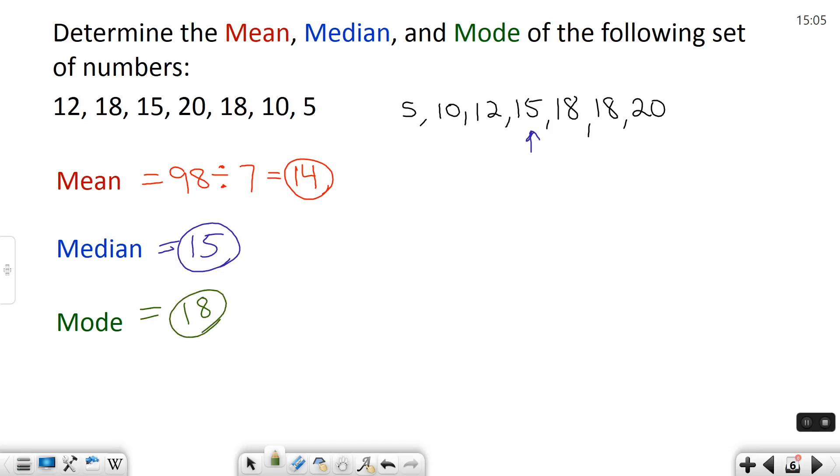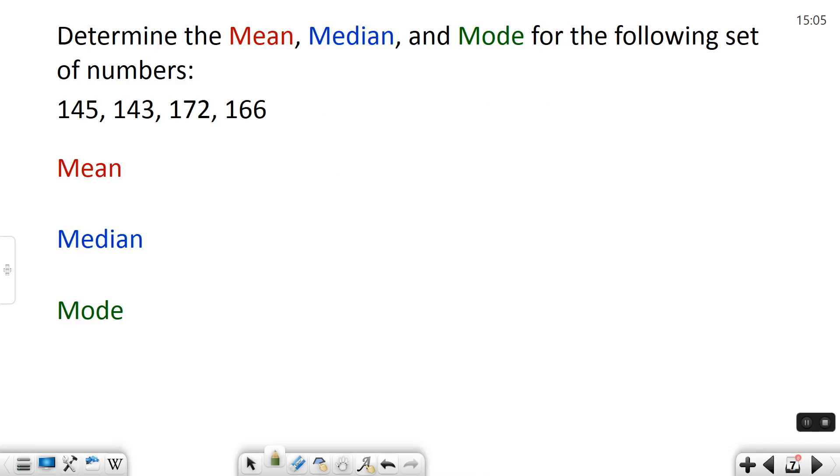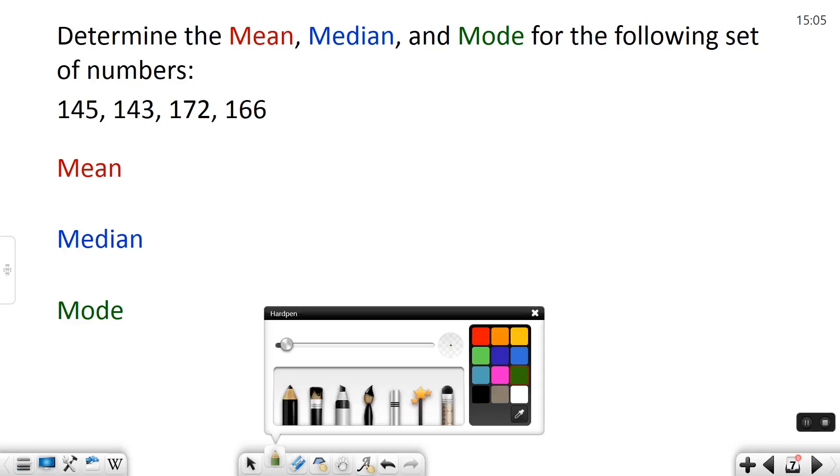Alright, so let's try one more example just to further emphasize how to find each of these three things. Determine the mean, median, and mode for the set of data. This time I have four numbers. So first thing that I like to do is write them in order from least to greatest.